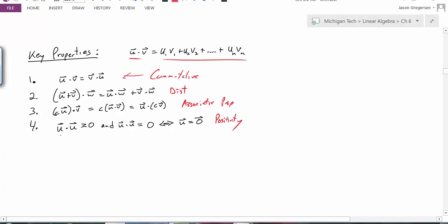This tells us that if I take u dot u, I take the dot product of a vector with itself, that has to be greater than or equal to 0. And in fact, it's only equal to 0 if and only if that u vector is 0. In other words, if I take any non-zero vector and a dot product with itself, that value would have to be greater than 0.